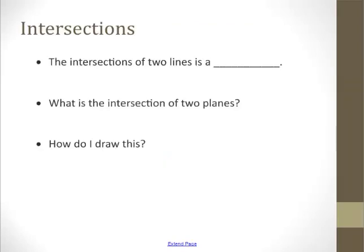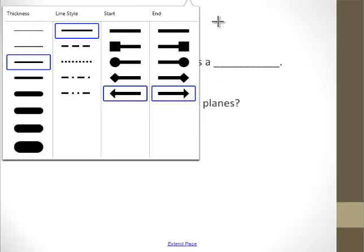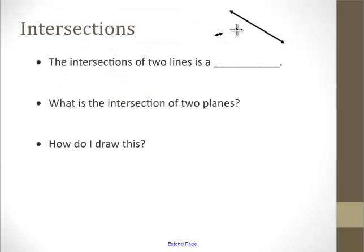Alright, so intersection of two lines is, well, if you think about it, if I were to draw two lines, let's make sure I got arrows on the ends. Alright, here's one line, here's the other line. They cross in the middle, and the spot where they cross, it's a point. Let's call that point A. So they cross at a point. So lines cross at points, planes cross at...